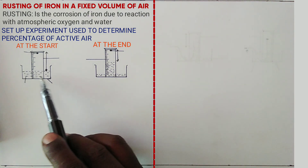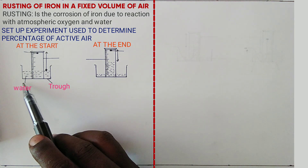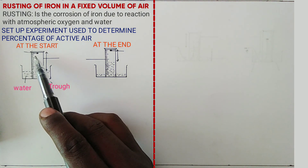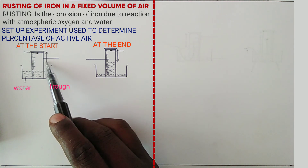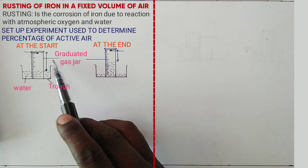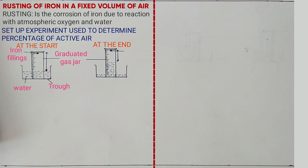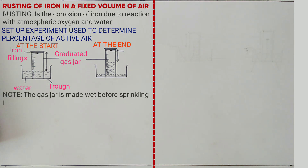At the start of the experiment, we have a trough with water inside. Then you invert a graduated cylinder over the water. The graduated cylinder contains a certain volume of air, for example 100 cm³. Then iron filings are placed inside here. It is advisable that the graduated cylinder is made wet before placing iron filings so that the iron filings stick on the wet surface.